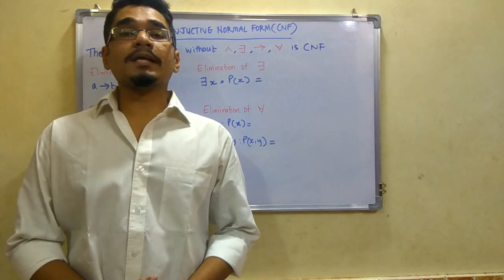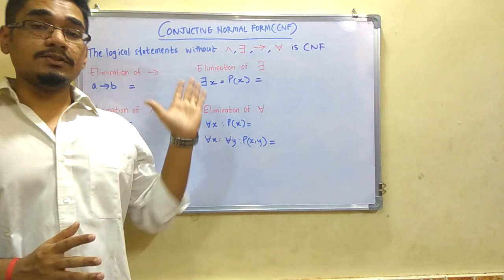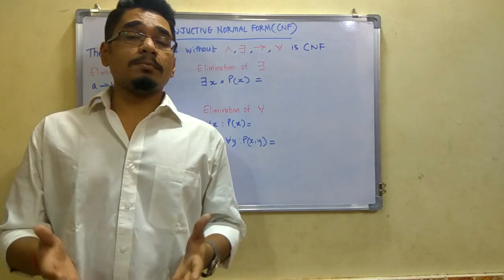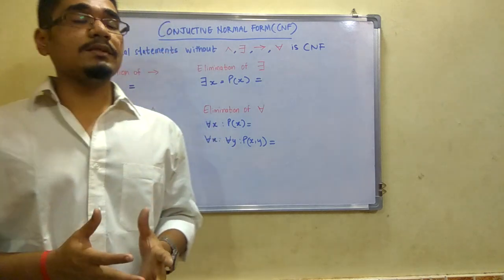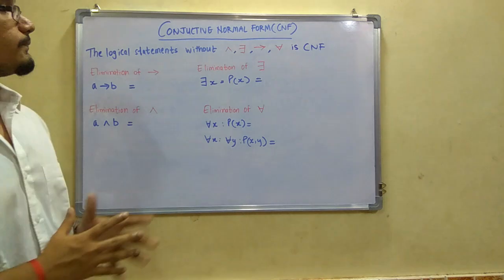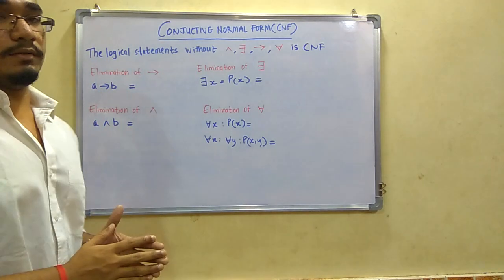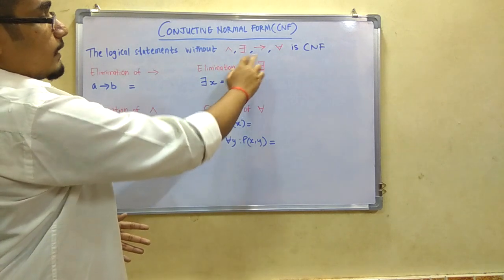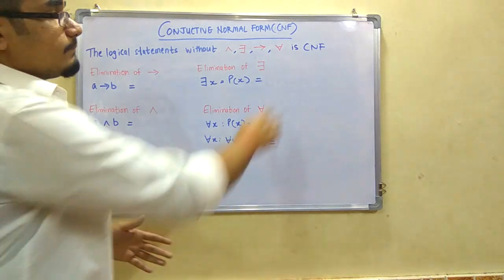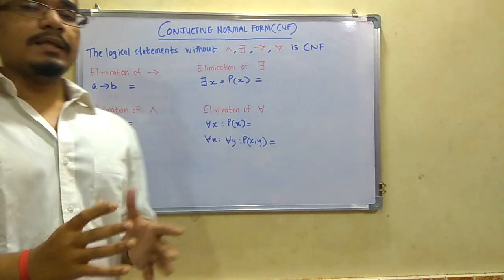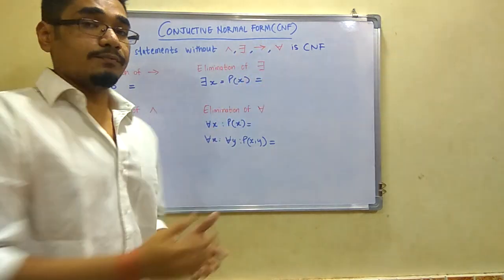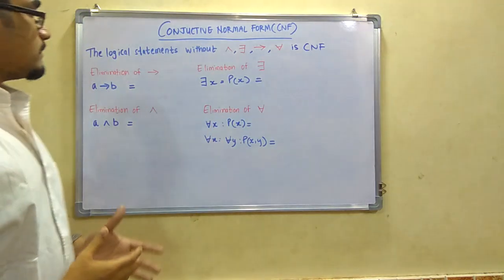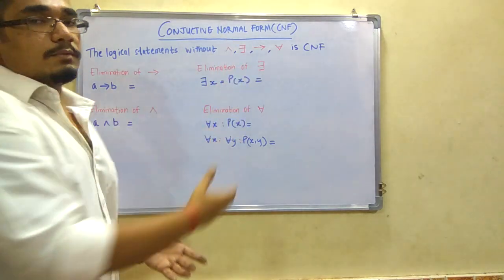In this video we will be discussing the CNF, that is the Conjunctive Normal Form. This is a most important topic in artificial intelligence and it is also related to problems with resolution. CNF are logical statements — specifically, logical statements without the symbols: the arrow, the existential quantifier (∃), and the superset (∀). If a statement consists of these symbols, we eliminate them using certain procedures to obtain a pure CNF.